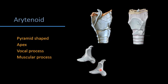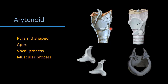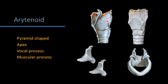The other process behind the vocal process is the muscular process, which takes the insertion of some muscles of the larynx. Both arytenoids sit on the upper part of the lamina of the cricoid cartilage. Very near to the apex we find corniculate and cuneiform cartilages — they are very tiny. Corniculate and cuneiform cartilages become content of the aryepiglottic fold, running between the arytenoid and the border of the epiglottis. These, along with the apex of the arytenoid and the epiglottis, are elastic in variety.